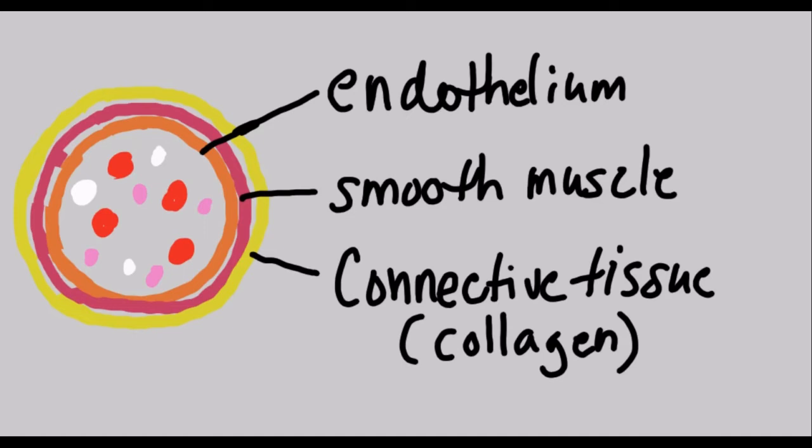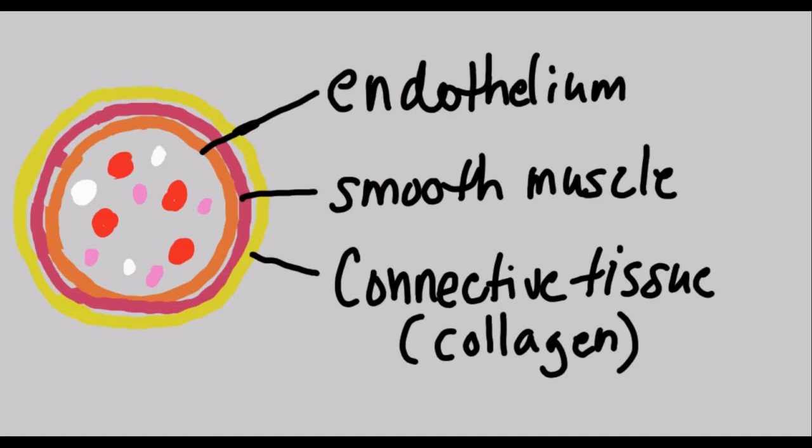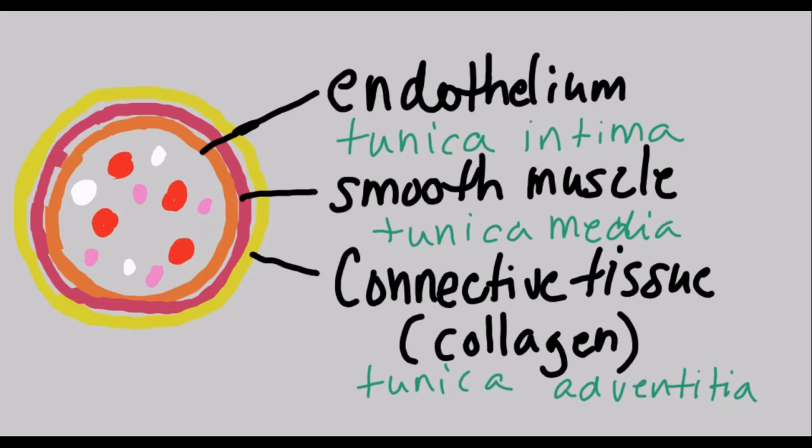When we get into 204, you're going to need to know the three layers of the blood vessel in more technical terms. The endothelium is going to become the tunica intima, the smooth muscle layer is going to be the tunica media, and the outer connective tissue layer is going to be the tunica adventitia.